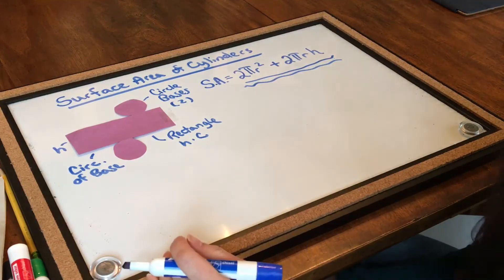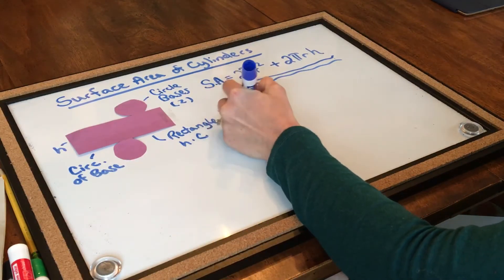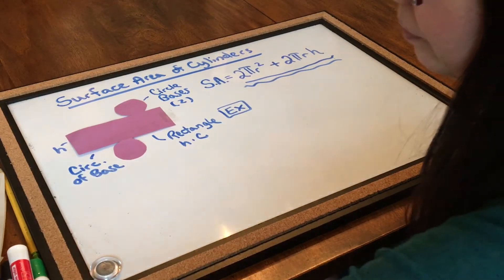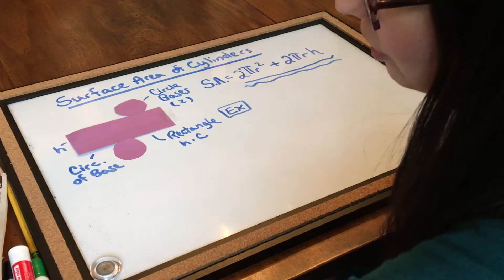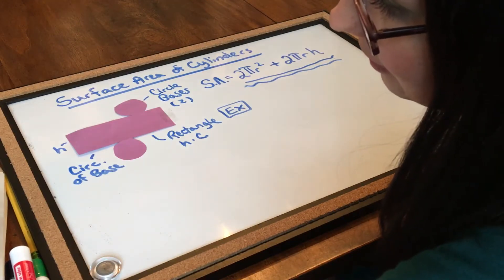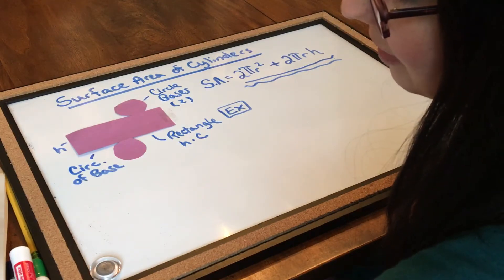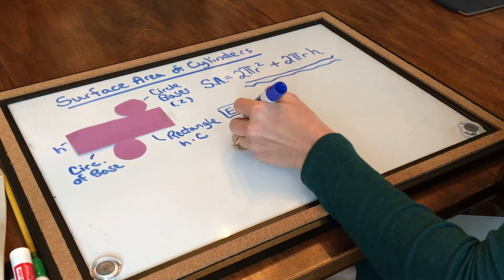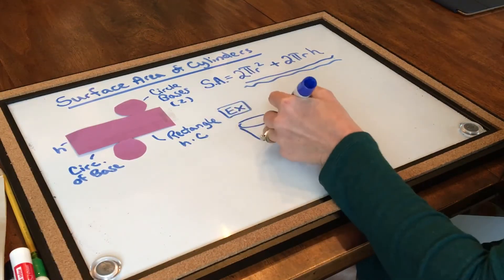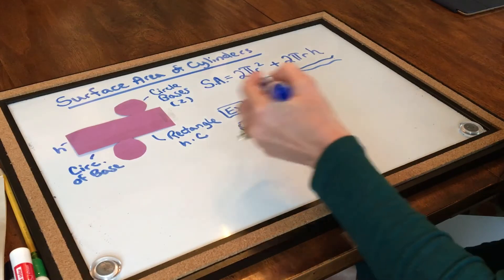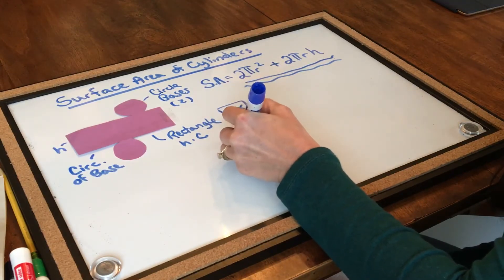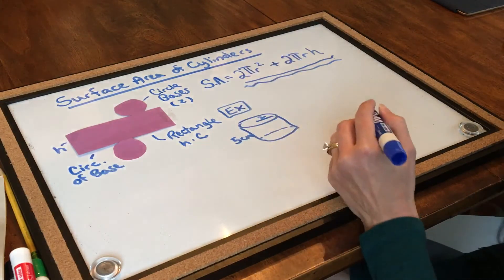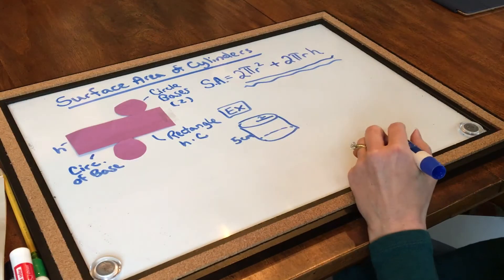All right, let's try an example. So for our example, we're going to use a cylinder that has a height of 5 centimeters and a base with a radius of 2 centimeters. So I'm just going to draw that out. It has a height of 5 centimeters and a radius of 2. We'll just try to remember that that's 2 centimeters.